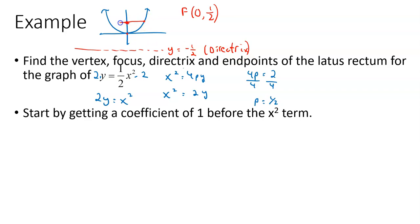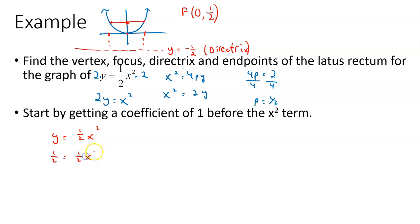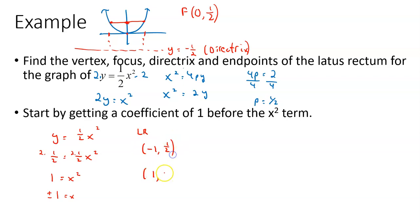The latus rectum goes through the focus over to the other side. Since the focus is (0, one-half), we substitute y equals one-half into the equation to find the x values — we already know the y-coordinates are going to be one-half. So one-half equals one-half x squared. Multiply both sides by 2 and we get 1 equals x squared, so x equals plus or minus 1. The latus rectum has endpoints (negative 1, one-half) and (1, one-half).